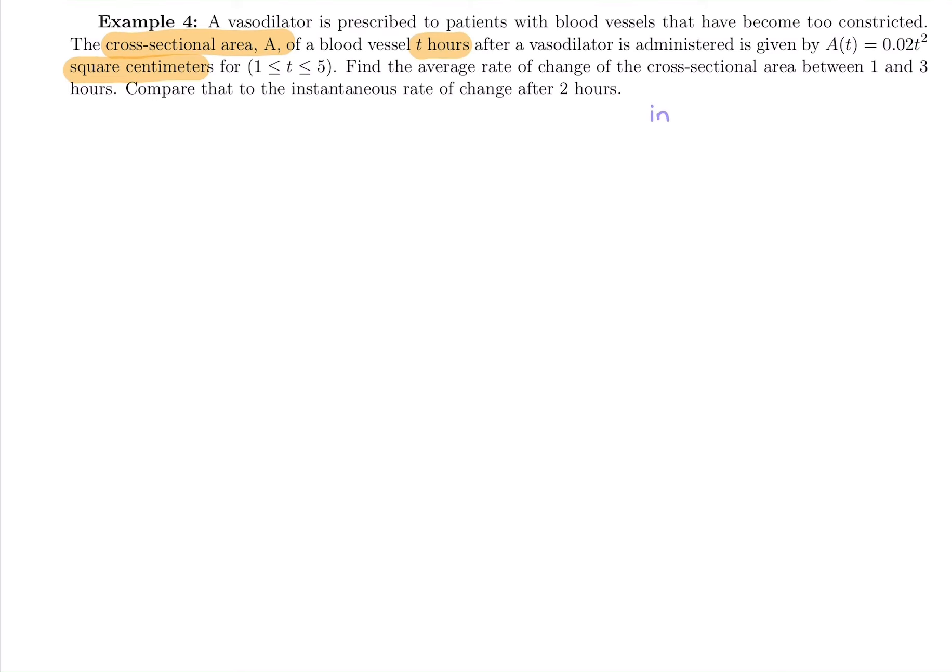So let's just pause before we even read what the question is. We want to figure out what are we plugging in and what are we getting out. So we have two things. We have t hours and area in square centimeters. So you plug in how many hours it's been since you've given somebody medicine and you get out the area in centimeters squared to make sure that their blood vessels are still open and pumping blood so that they're doing okay.